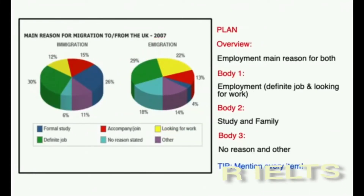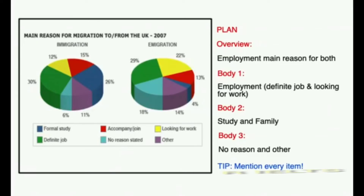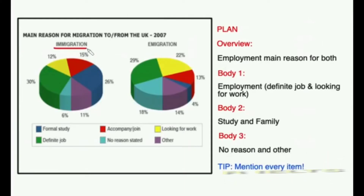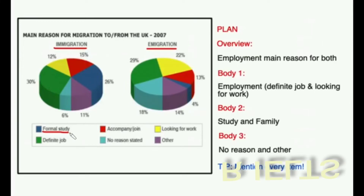Once you know what the chart is about and the key point, you need to think about how you will organise it. This is one of the most important things you'll do. If the examiner struggles to follow what you have written and gets confused as they read it, you could get a low score for coherence and cohesion. One common mistake with IELTS pie charts is to think that the best way to describe them is one by one — describe the first one about immigration and then describe the second one about emigration. This isn't usually a good choice because the differences will be in different paragraphs and it can be confusing.